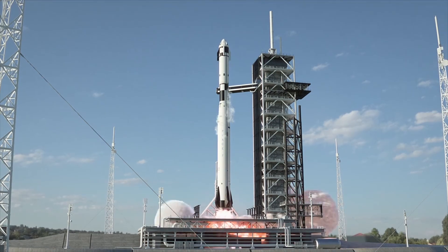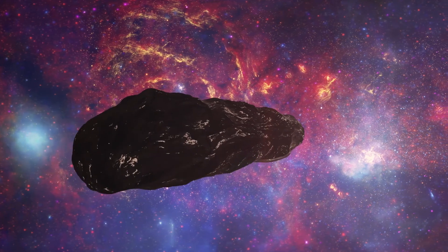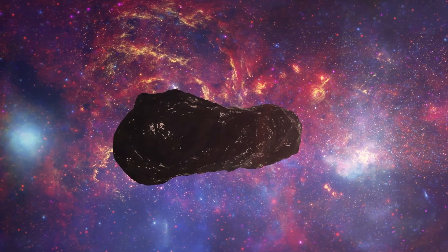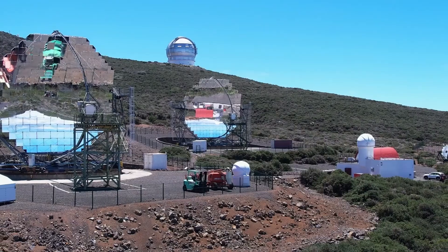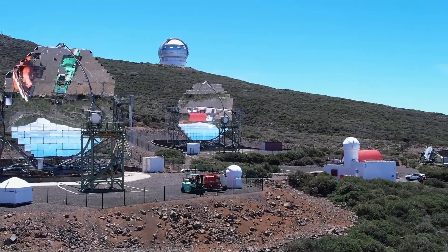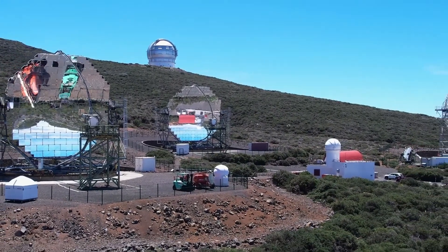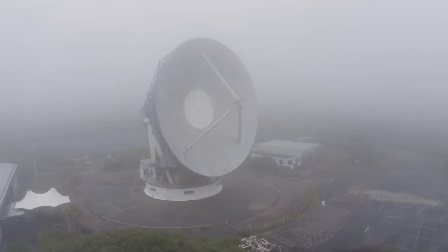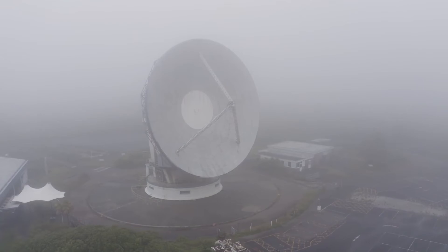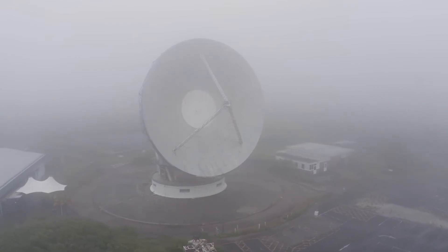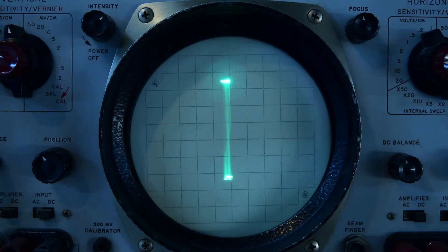Its route is mathematically ideal for dropping observation units or probes at multiple planets without altering course. That kind of planning takes knowledge, strategic intent, and the probability of such a trajectory occurring by chance is less than one in a billion. As if that weren't strange enough, the object will vanish behind the sun precisely at its brightest and most active phase, exactly when Earth's telescopes can't observe it. It's as if it wants to remain unseen.